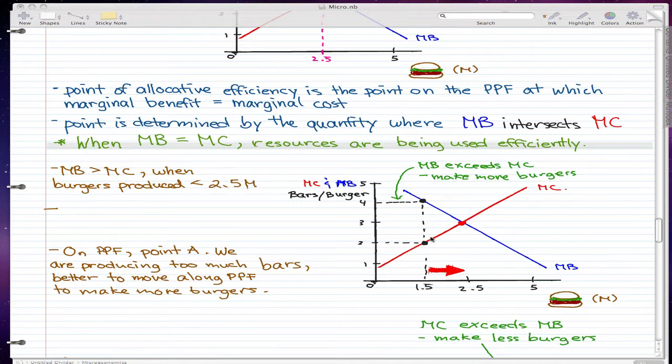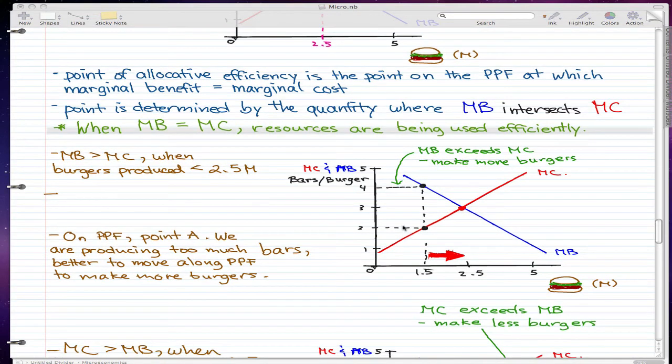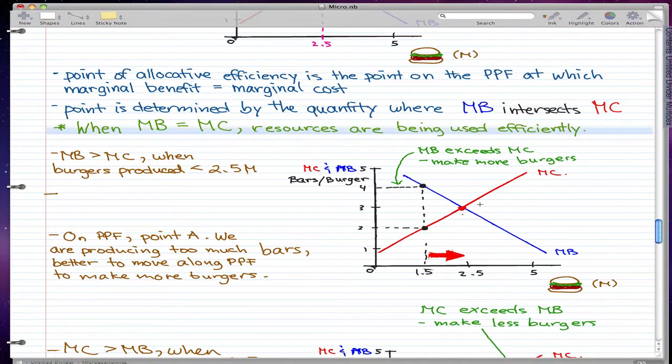In their perspective, they will get more benefit from one more burger than it will cost them for one more burger. Remember that the best point of production would be 2.5 million burgers. Well, right now we're only making 1.5 million. So marginal benefit is greater than marginal cost when burgers produced is less than 2.5 million.